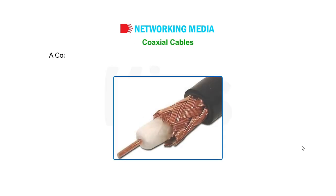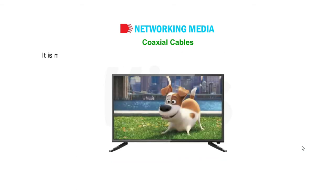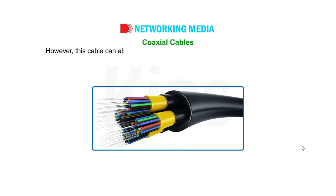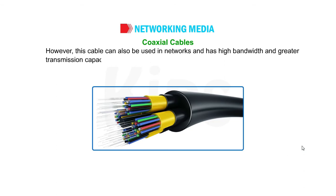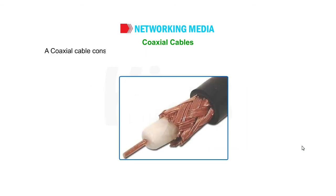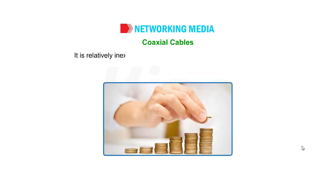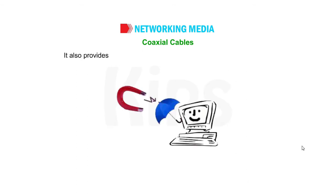Coaxial cables. A coaxial cable is used in the transmission of video, communications and audio. It is mainly used by the cable television industry to connect TVs to a cable TV service. However, this cable can also be used in networks and has high bandwidth and greater transmission capacity. A coaxial cable consists of a central copper wire surrounded by insulation and then a shield of braided wire. It is relatively inexpensive, can transmit data at higher rates, and provides better protection against electromagnetic disturbances.